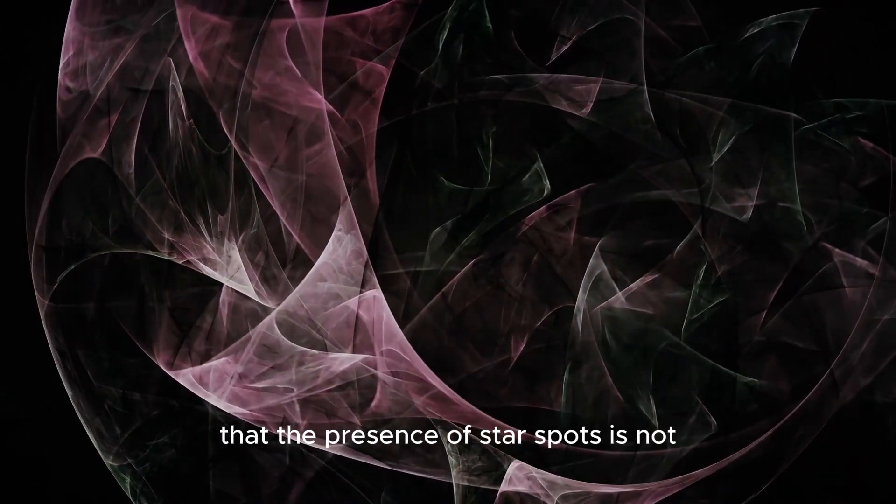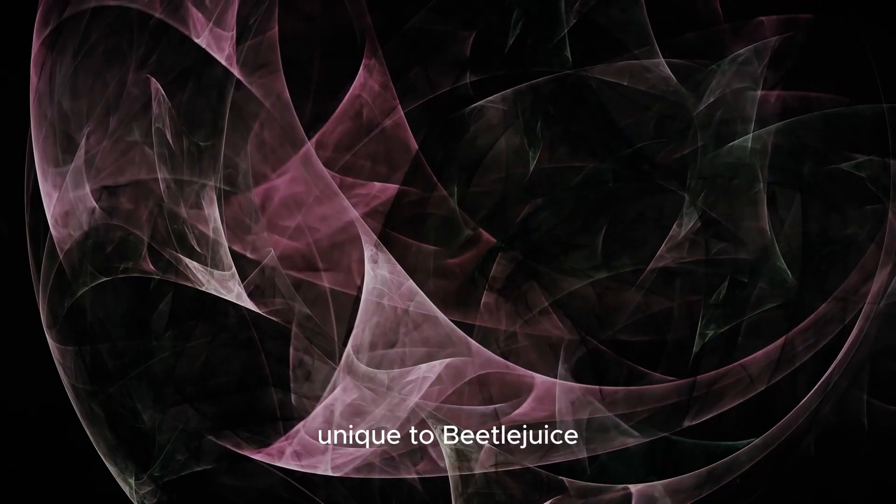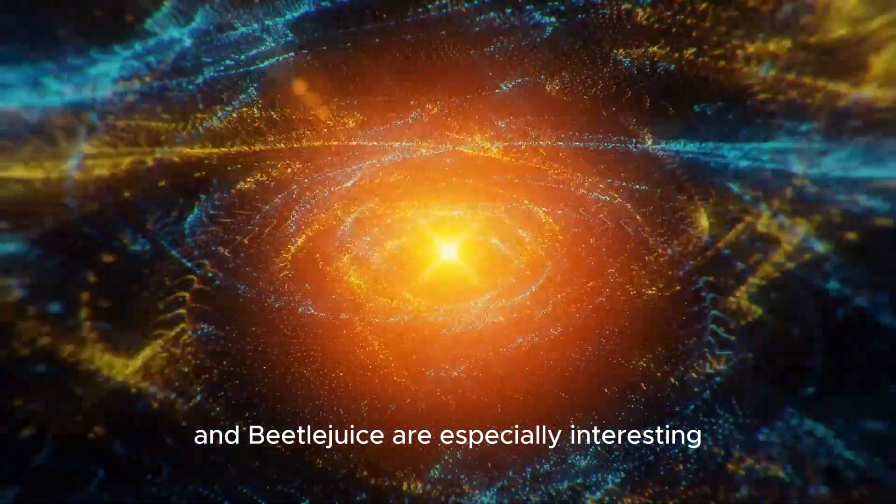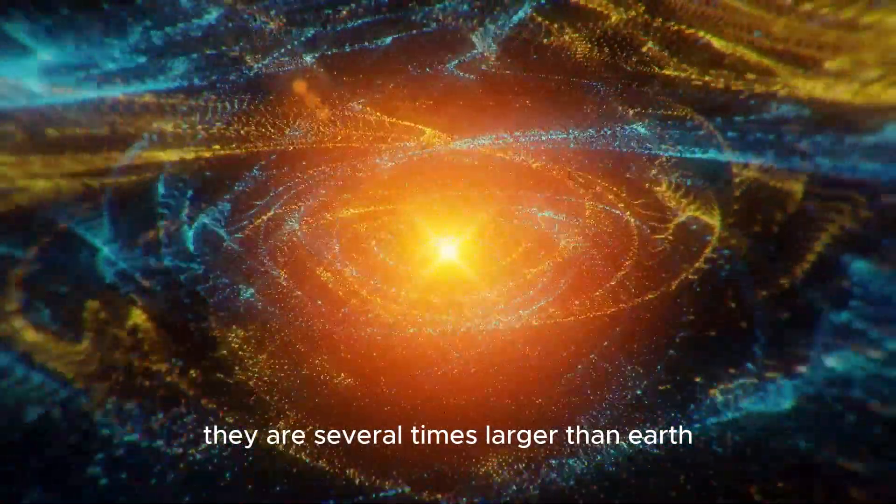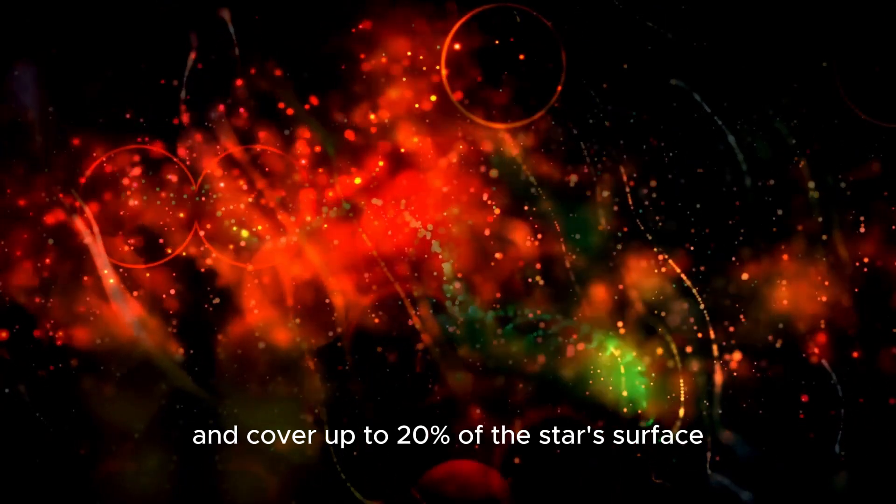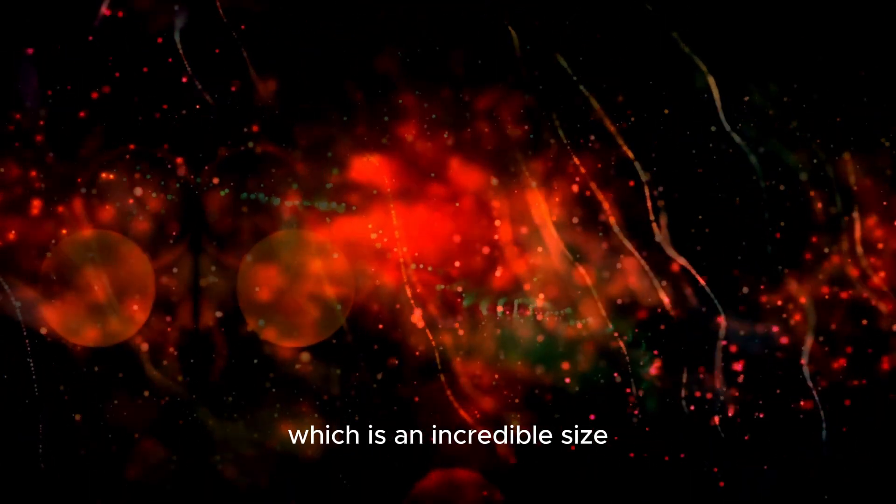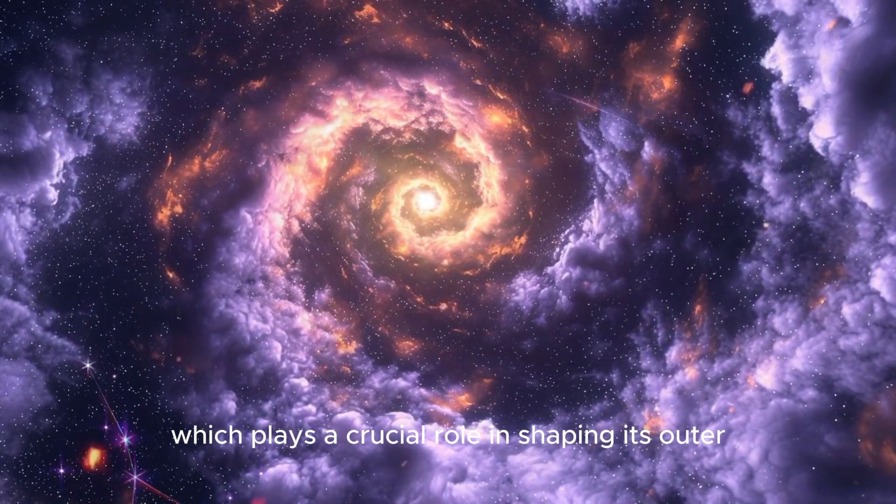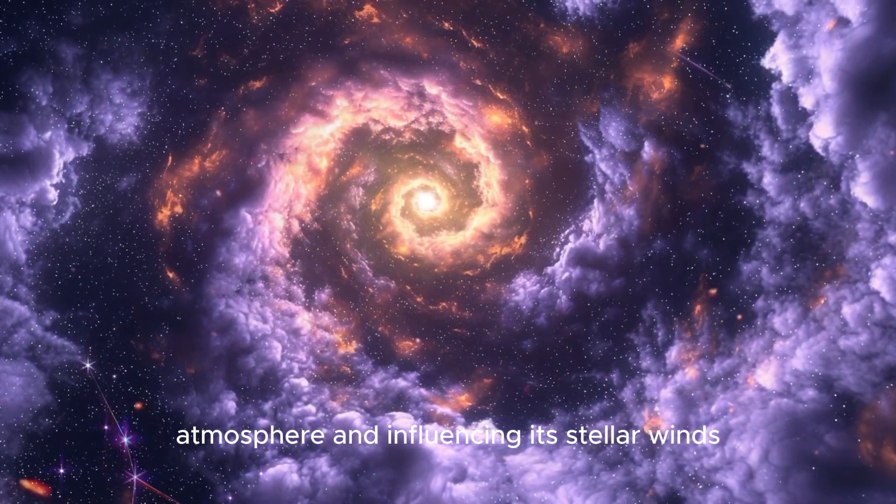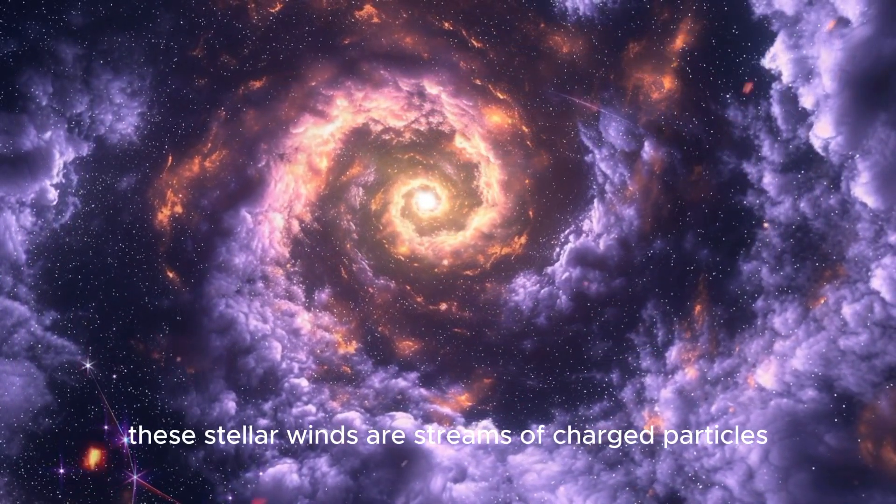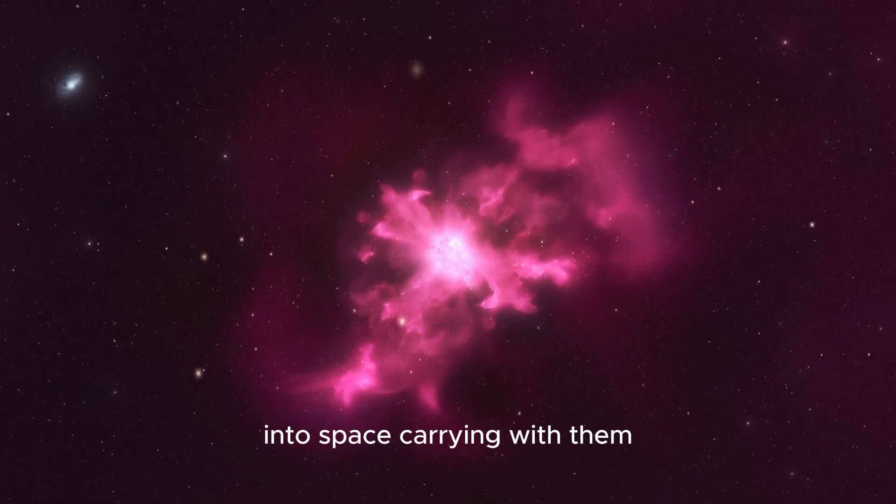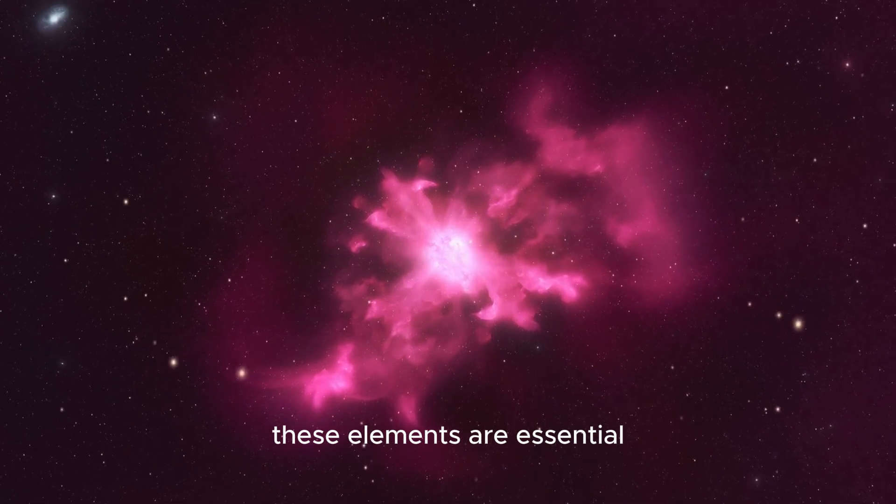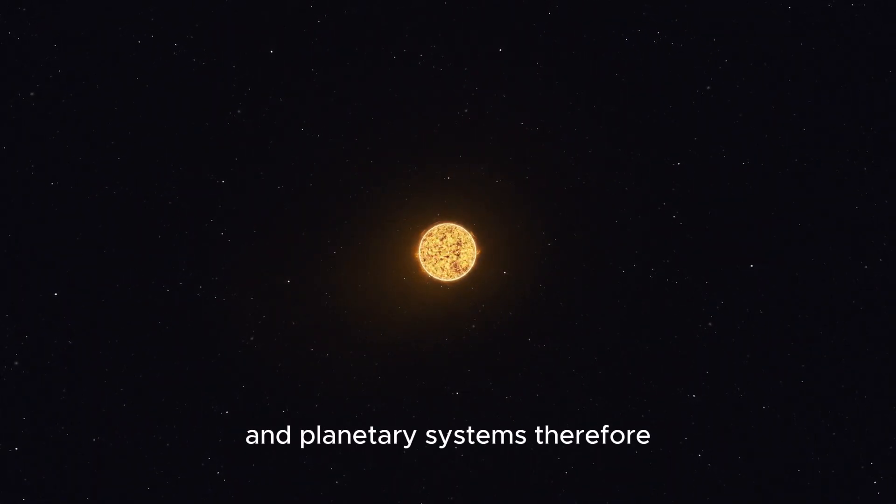It is important to mention that the presence of star spots is not unique to Betelgeuse, as they are also observed in other stars, including our own sun. The star spots in Betelgeuse are especially interesting because of their size. They are several times larger than Earth and cover up to 20% of the star's surface, which is an incredible size. The presence of these spots suggests that Betelgeuse may have an active magnetic field, which plays a crucial role in shaping its outer atmosphere and influencing its stellar winds. These stellar winds are streams of charged particles that flow outward from the star into space, carrying with them elements synthesized in the star's core. These elements are essential for the formation of new stars and planetary systems.